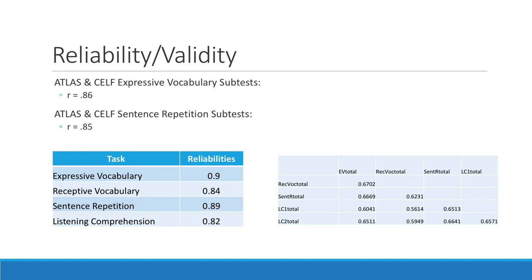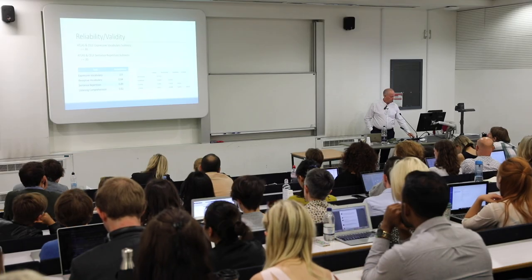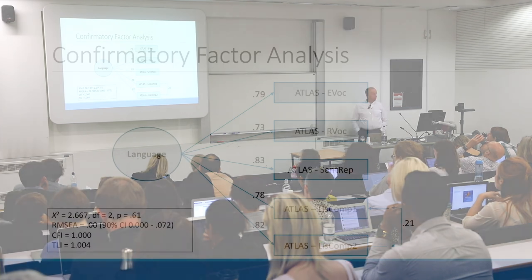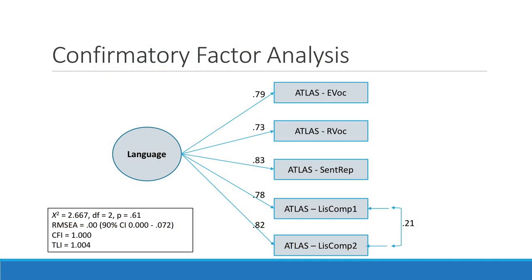This table shows the correlations between the different subtests of ATLAS, which are pretty uniform and moderately high — all basically in the 0.6 to 0.7 range. A confirmatory factor analysis yields essentially a perfect fit to the data, and a unidimensional language construct with very large and uniform loadings from the different subtests. We're very pleased with these initial data.